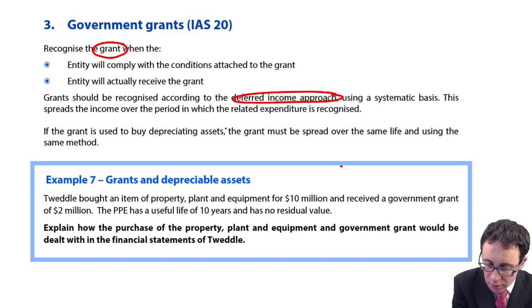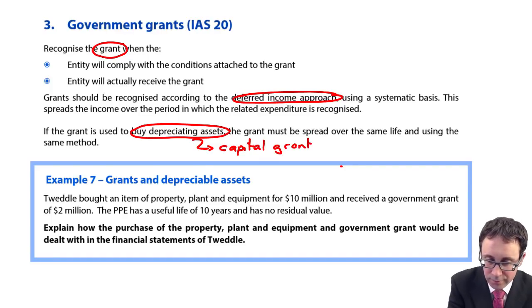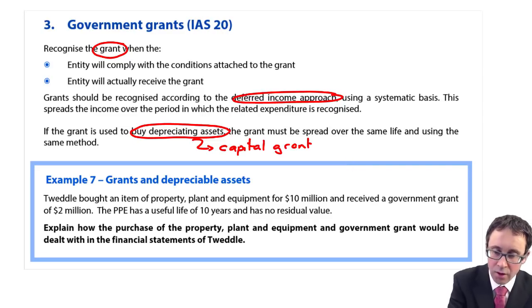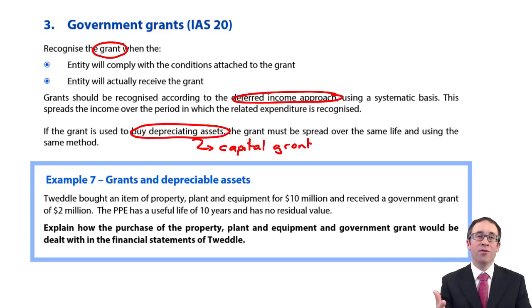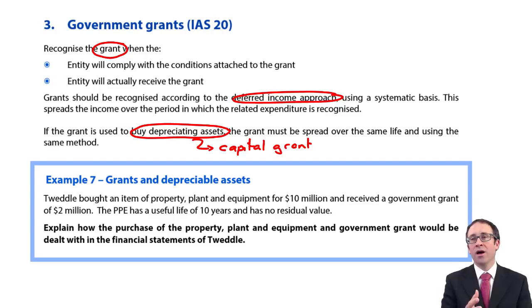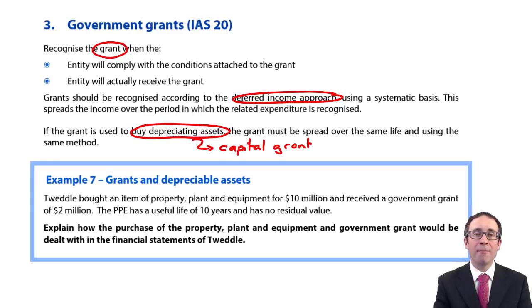If you buy a depreciating asset, that is referred to as a capital grant. Alternatively, you may have received the grant for reaching a number of employees that you've employed, and received cash to help you recruit that number — that is referred to as a revenue grant. That revenue grant will be recognised on a systematic basis, matching the expenditure or income to the period where you've got that benefit.